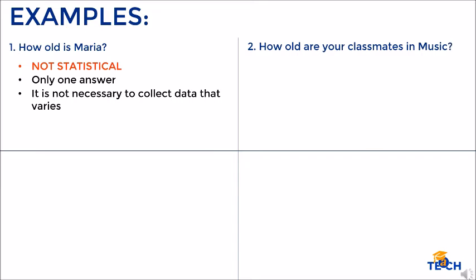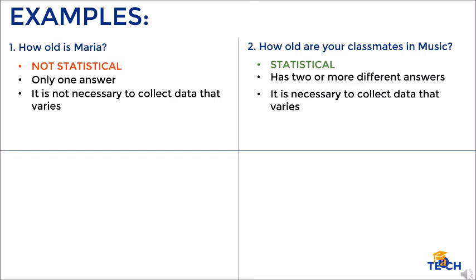Number two: How old are your classmates in music? Statistical, because this has two or more different answers and it is necessary to collect data that varies.